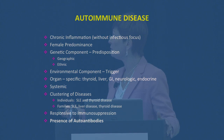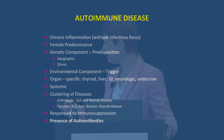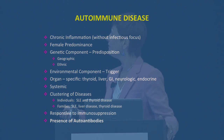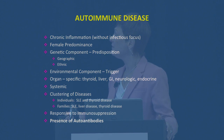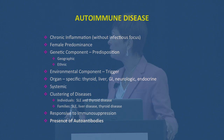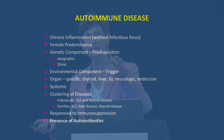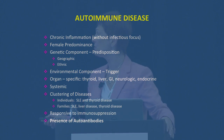But even if you have a genetic component, you need some kind of environmental component, a trigger of some sort, to be able to manifest the disease. They can be organ-specific, like thyroid, liver, and diabetes. They can be systemic, and this will be the ones we're concentrating on today. You can have clustering of diseases — one individual can have more than one autoimmune disease, or in families, one person can have one disease and another person can have another autoimmune disease. They are responsive to immunosuppression.